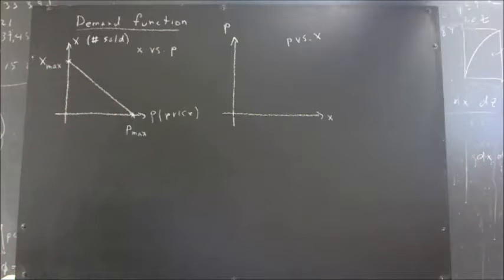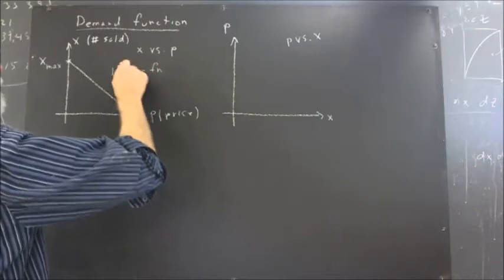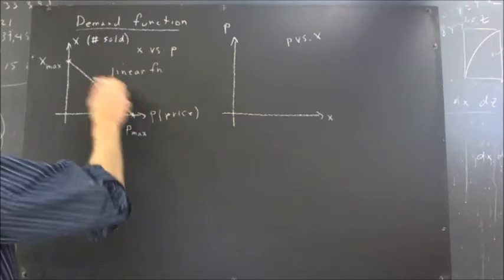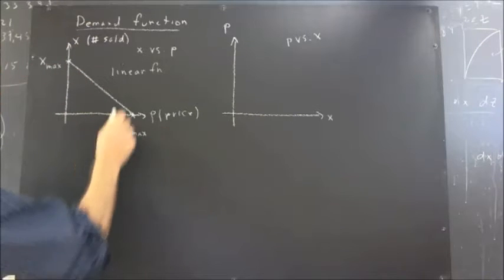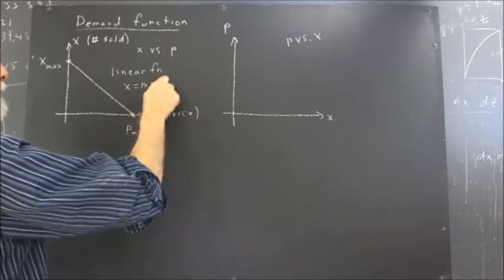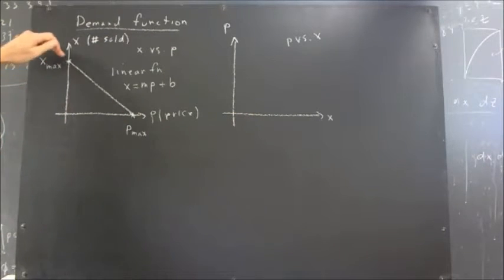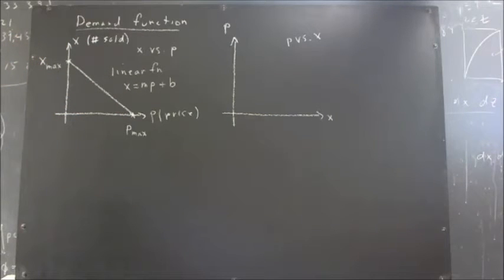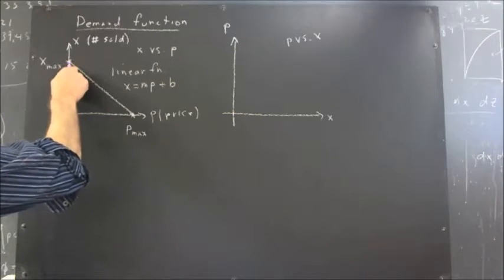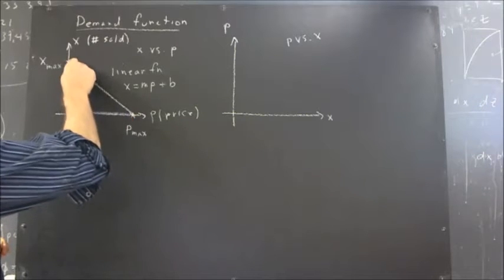This is a linear function. Its form is — now instead of Y equals MX plus B, it's going to be X equals MP plus B. What's the slope of this graph? You should pause and figure out the slope from this point to this point.